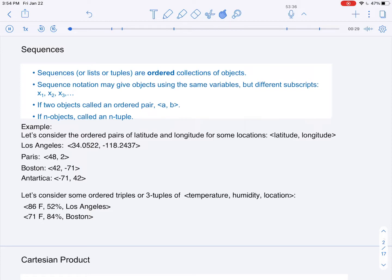If there are two objects, it's called an ordered pair, and we use the angle brackets in order to denote the sequence. For example, we have angle bracket a comma b to indicate an ordered pair.